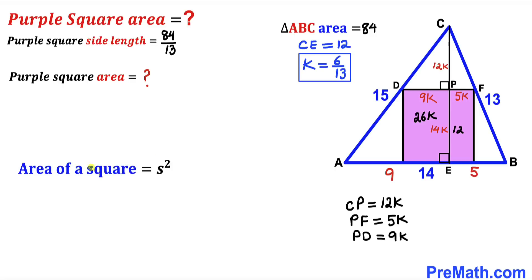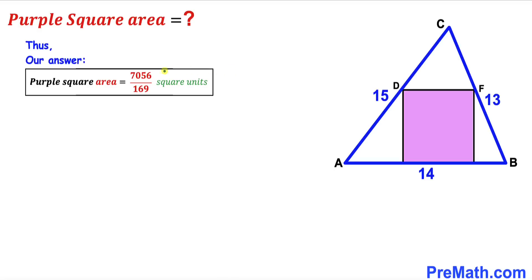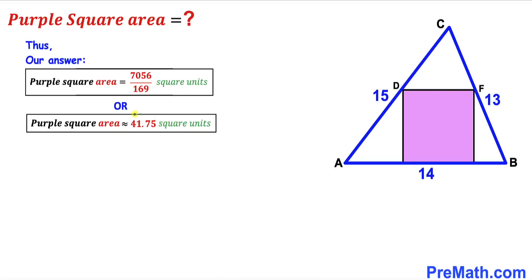Finally, we calculate the area of the purple square using the formula: area equals s squared, where s is the side length. The side length is 84/13, so the area equals (84/13) squared = 7056/169 square units, which is approximately 41.75 square units. Thanks for watching, and please don't forget to subscribe for more videos.